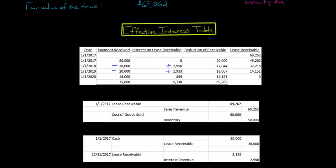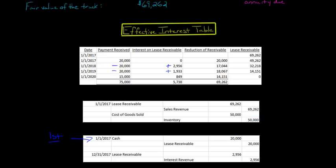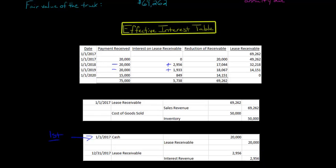When we receive the first payment, we debit cash and credit lease receivable for $20,000 — the receivable goes down because you've received what was owed. At the end of that first period, we had effective interest of $2,956, so we credit interest revenue for $2,956 and debit lease receivable for $2,956. On the income statement for December 31, 2017, we'd show interest revenue of $2,956 plus the profit from the transaction — sales revenue of $69,262 minus the $50,000 cost — reflecting the total impact on net income in year one.